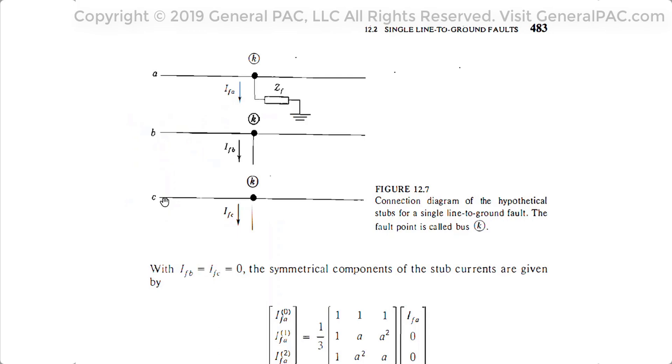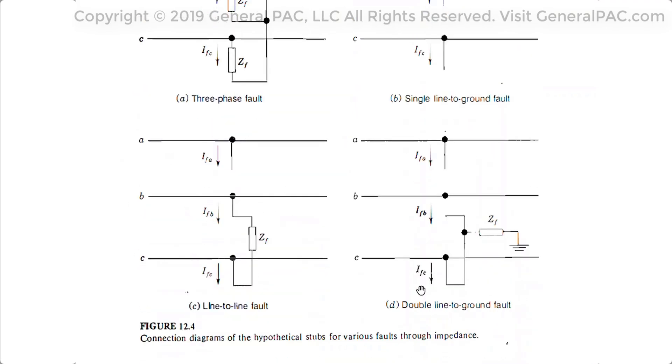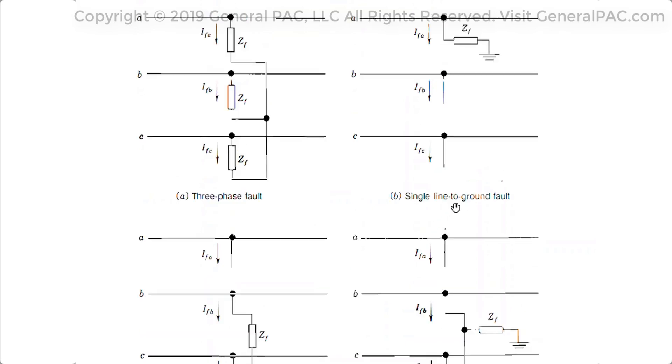Now in chapter number 12, in this part at least, we're going to just introduce what we're going to talk about in the subsequent parts. But in this chapter, we go over a lot of different types of faults involved. And we'll be talking about three phase faults, single line to ground faults, line to line fault, and double line to ground fault. These four different fault types. And again, really delving into how to construct the sequence network diagrams based off of the type of fault and the equations that are involved.